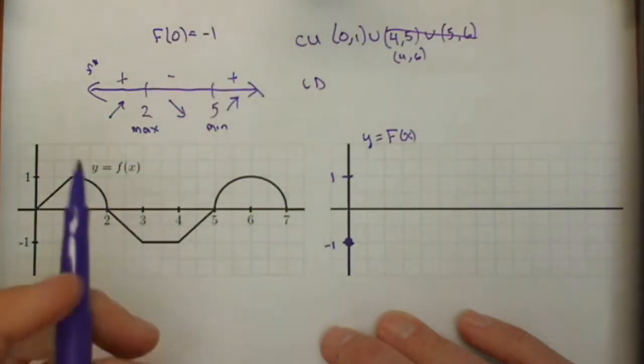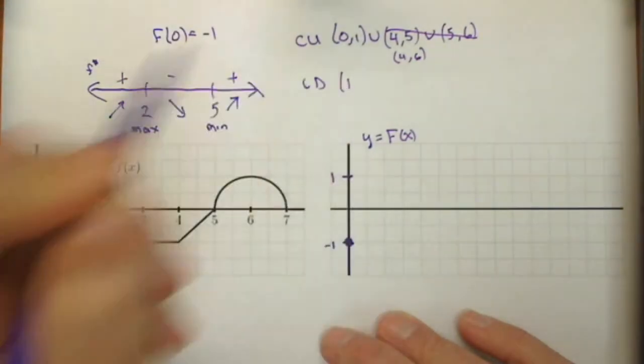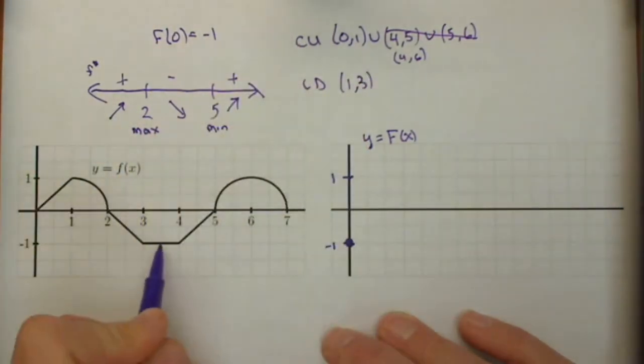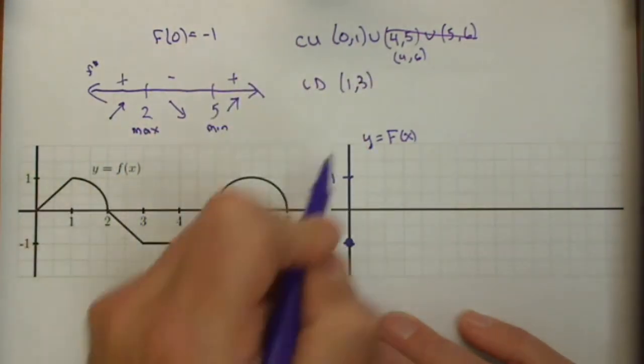Concave down, wherever our derivative is decreasing. So from 1 to 3, and from 6 to 7.